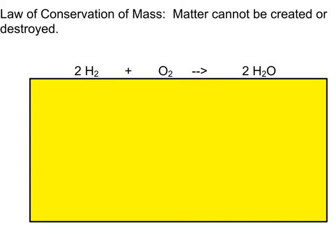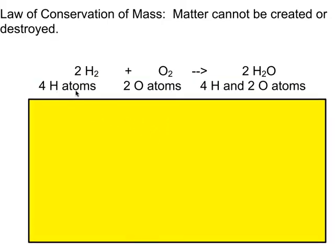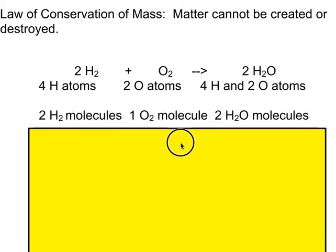All we're doing is rearranging or changing forms. Take for example the reaction we were performing in lab with the rockets, where we looked at hydrogen plus oxygen. With this balanced reaction, we can think of it as: we have four hydrogen atoms plus two oxygen atoms making four hydrogen atoms and two oxygen atoms. We can see that mass is conserved because you have the same number of hydrogen atoms on both sides.